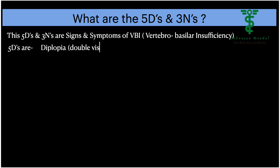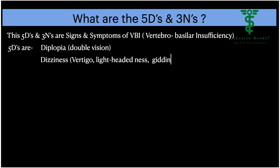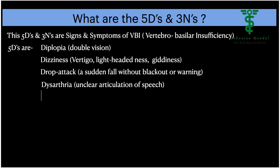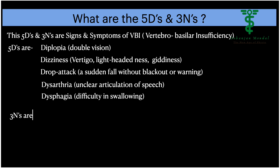The five D's are: Diplopia, meaning double vision; Dizziness, meaning vertigo, lightheadedness, or giddiness; Drop attack, meaning a sudden fall without blackout or warning; Dysarthria, meaning unclear articulation of speech; and Dysphasia, meaning difficulty in swallowing.